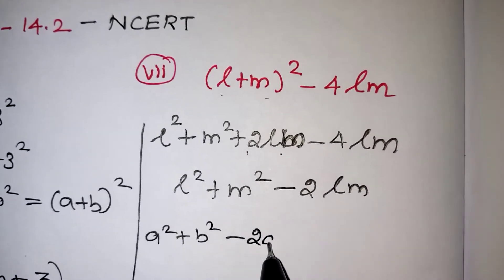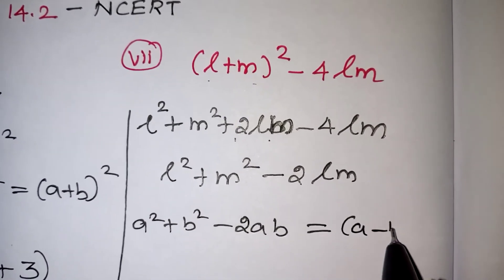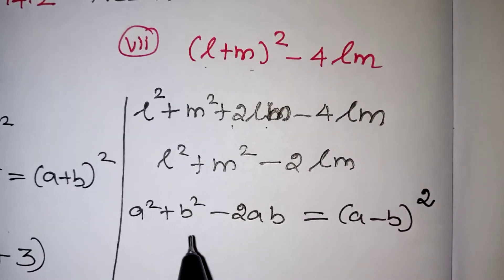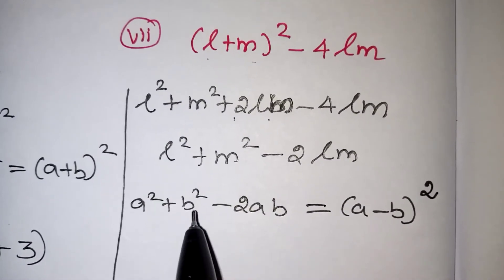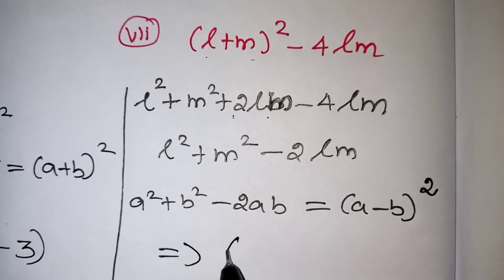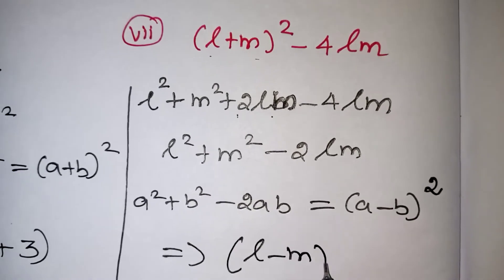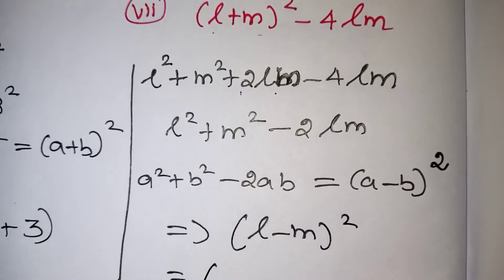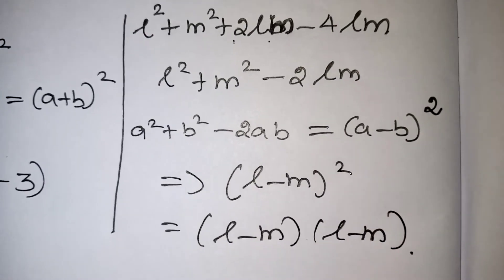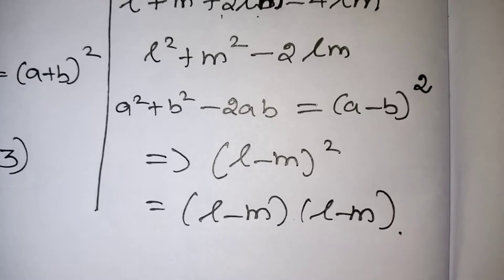Now this looks like a squared plus b squared minus 2ab, which is the formula of a minus b the whole squared. In the place of a we have l and in the place of b we have m. So the answer is l minus m the whole squared, which can be split into (l − m)(l − m). That is the factorization value for the given problem.